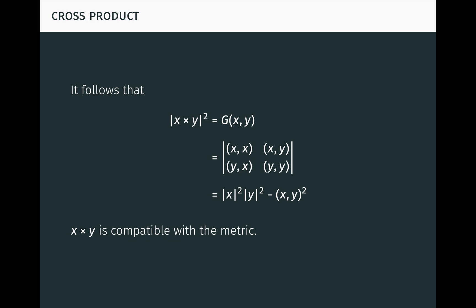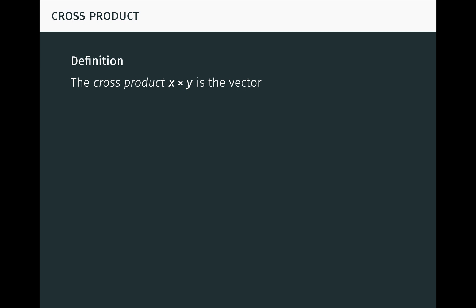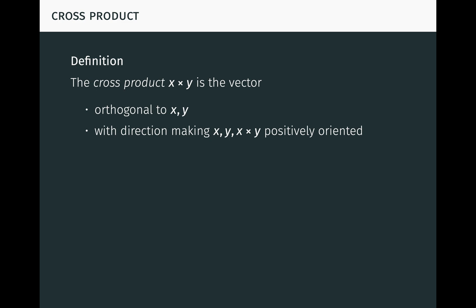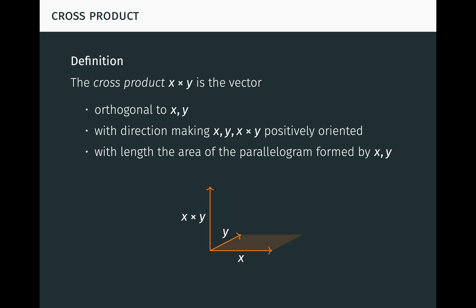All of this justifies the familiar definition of the cross product. The cross product x cross y is the vector orthogonal to x and y, with direction making the vectors x, y, and x cross y in that order positively oriented, and with length equal to the area of the parallelogram formed by x and y, where it's understood that x cross y is 0 when x and y are linearly dependent and the parallelogram formed is degenerate. Here's what the cross product looks like under the right-hand orientation of the space. If we had chosen the left-hand orientation of the space, the cross product would appear in the opposite direction.